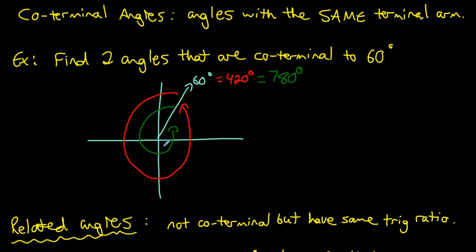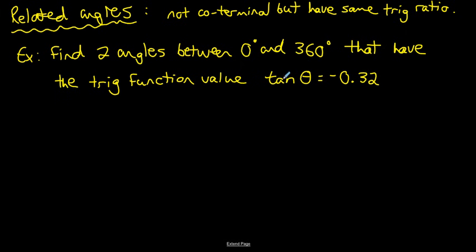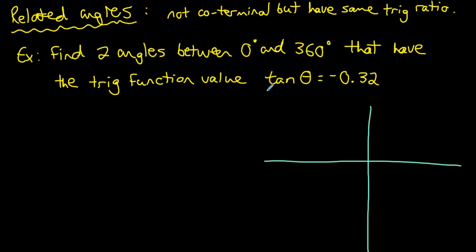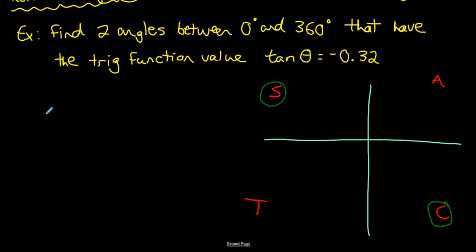Related angles are angles that don't share the same terminal arm but have the same trig ratio. There are always two angles between 0° and 360° with the same trig ratio. For example, find two angles between 0° and 360° with a tan ratio of negative 0.32. Since the tan ratio is negative, it will be negative in the sine quadrant and the cosine quadrant. The calculator will only give one answer, so we use the reference angle to find the second.